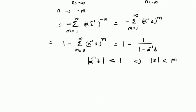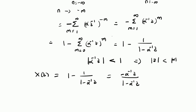Therefore, the Z-transform of the anti-causal signal -α^n · u[-n-1] is given by 1 minus 1/(1 - α⁻¹Z), which simplifies to -α⁻¹Z / (1 - α⁻¹Z). By multiplying both numerator and denominator by Z⁻¹α, we get 1 / (1 - Z⁻¹α), or equivalently 1 / (1 - αZ⁻¹).